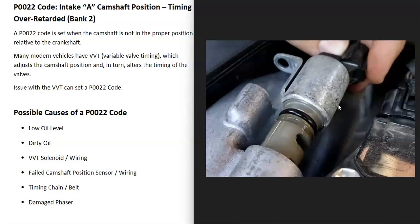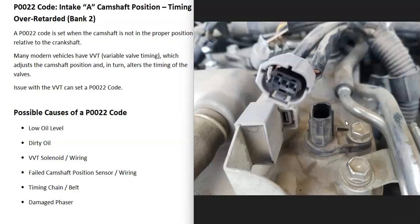The next possible cause is a bad camshaft position sensor. Usually if that sensor goes bad you're going to get other codes, so pay attention to those. But if it's just starting to fail or having some kind of issue, it is possible that it's just reporting bad information — meaning there's no actual problem inside the system, but the sensor has failed or is starting to fail and is just sending bad data back to the computer.